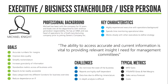We've brought it all together in one persona — a blend of the executive, the business stakeholder, and the user persona — with the name Michael Knight. We keep a really simple professional background since this is an aggregate of a bunch of different people. Key characteristics: goals, challenges, and typical metrics they currently look at. We need to establish their goals, understand if we can solve their challenges, and address what they currently look at — because if we miss those in our solution, that's probably going to be the first complaint.